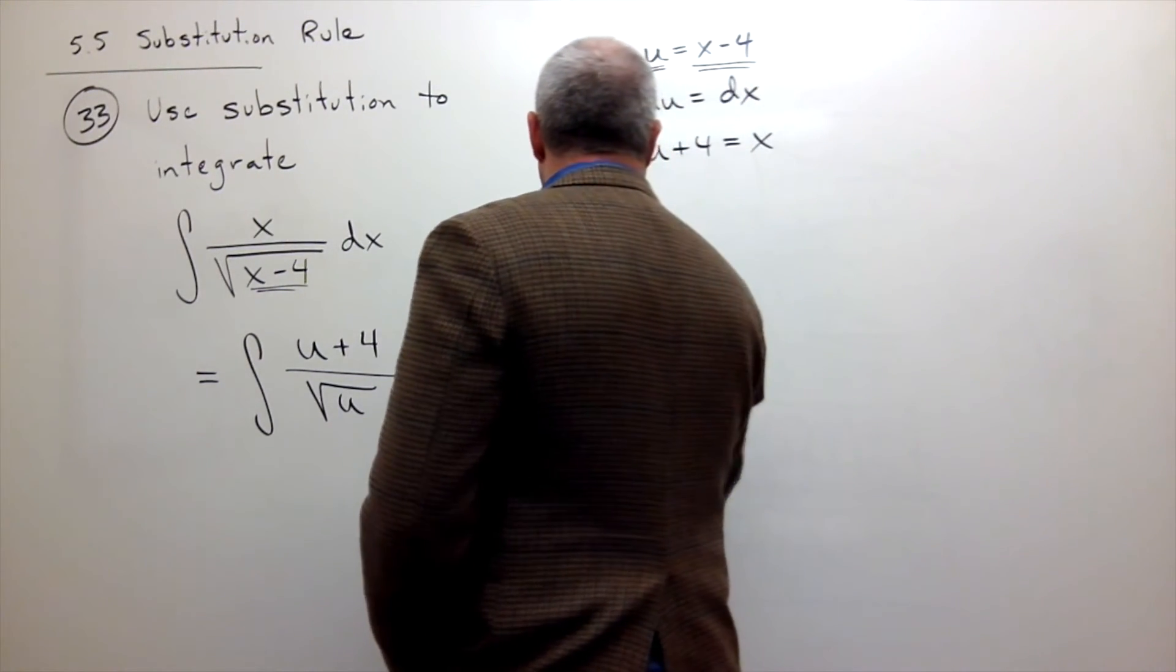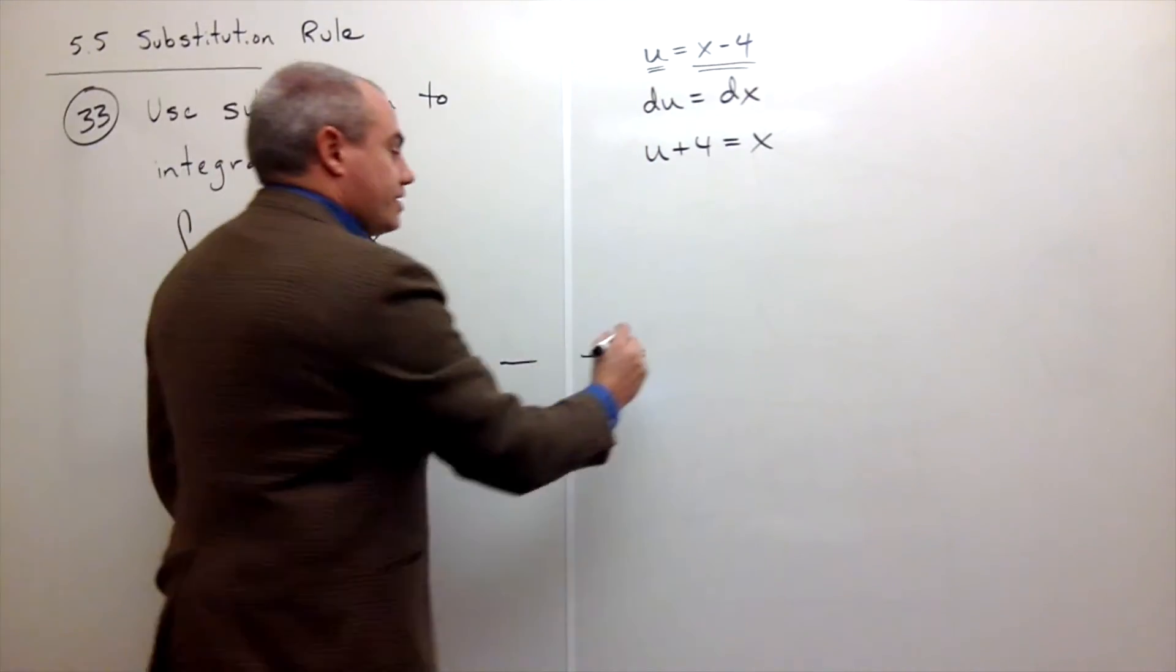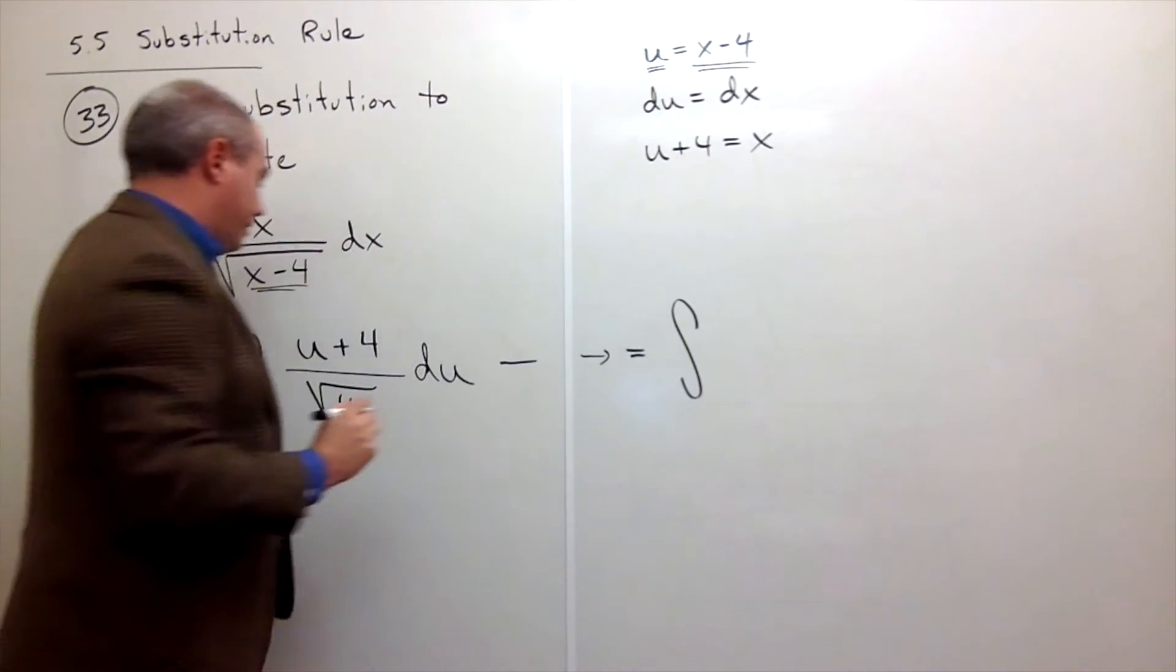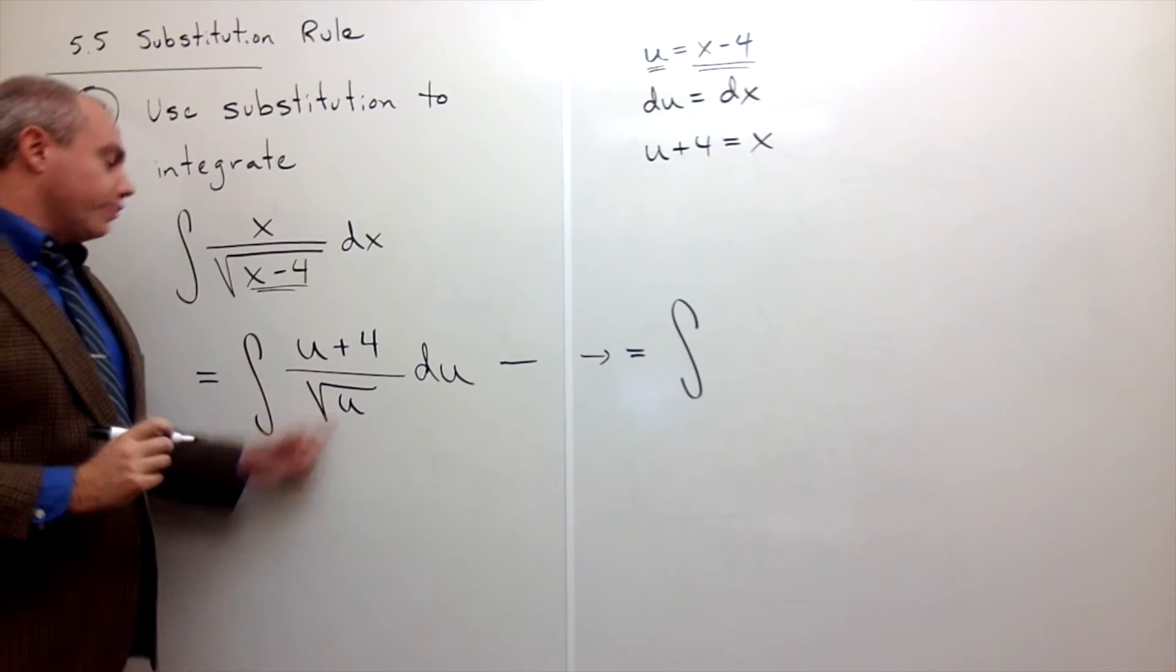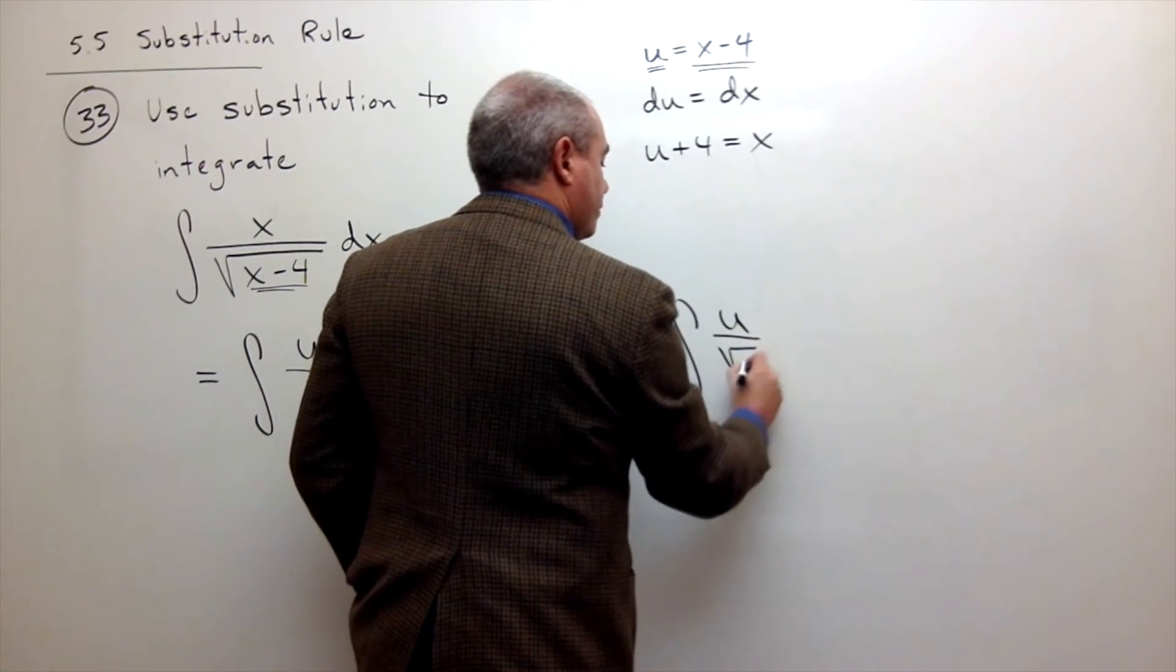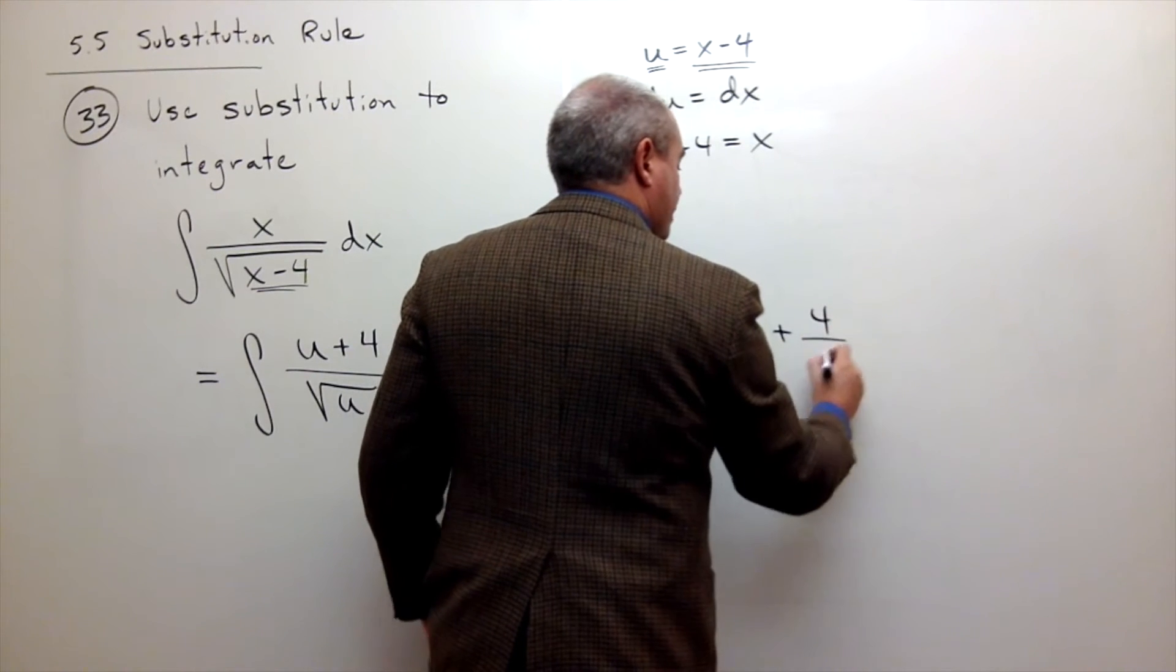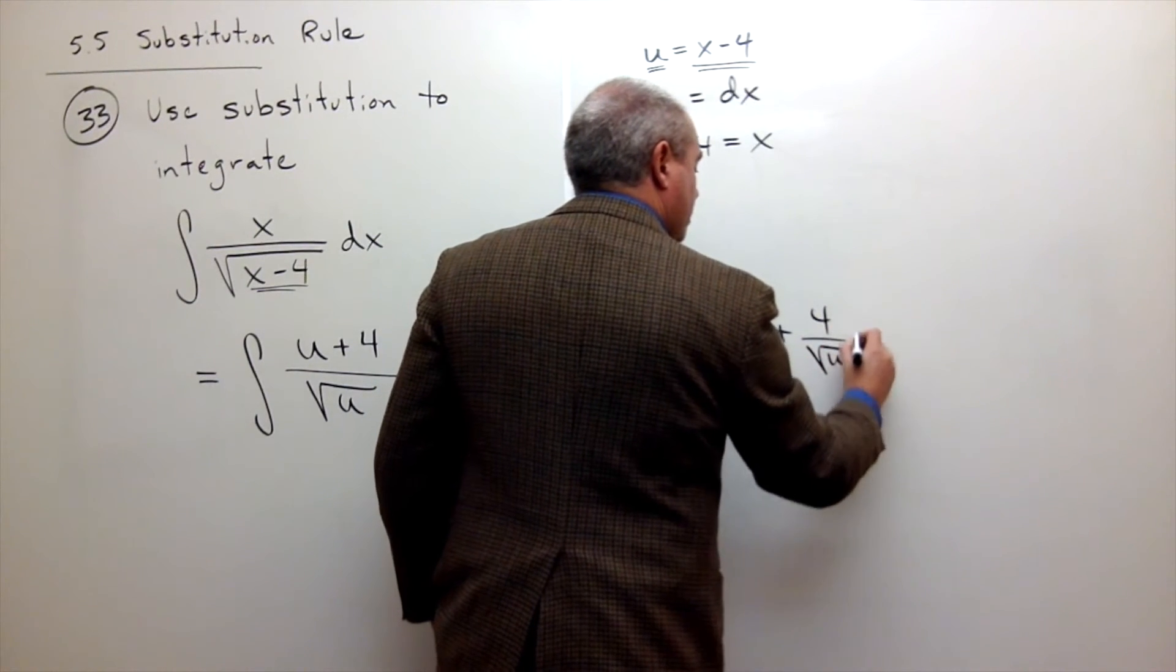So I want to rewrite this as the integral of u over the square root of u plus 4 over the square root of u, du.